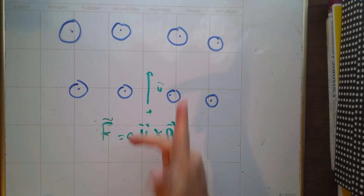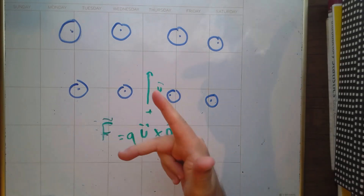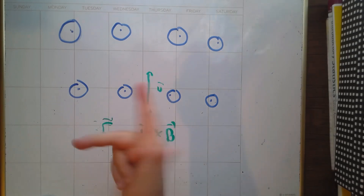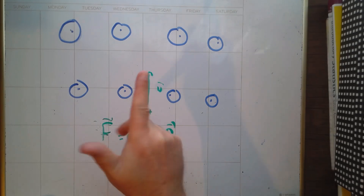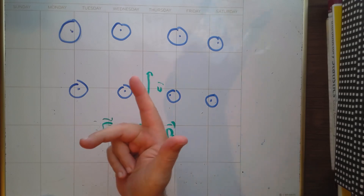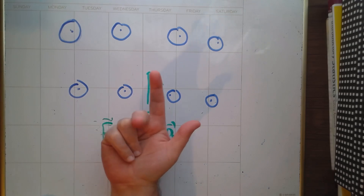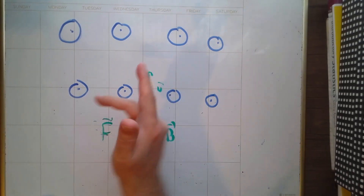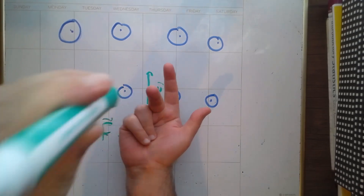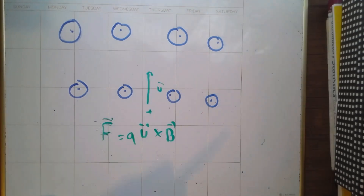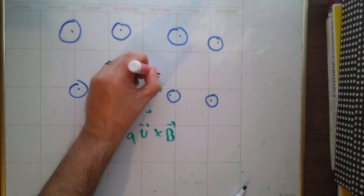The three-finger method: hold your right hand so your pointer finger points in the direction of v. Your hand is free to rotate — rotate it until your middle finger lines up with B. The order is v, B, F — so I need my middle finger to line up with B, which is coming out toward your eyeballs. That means F will point to the right, so I'll have a magnetic force pushing this way.